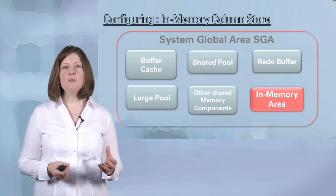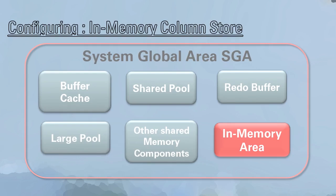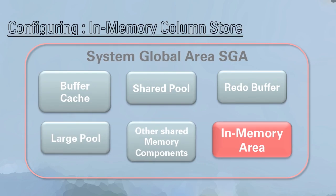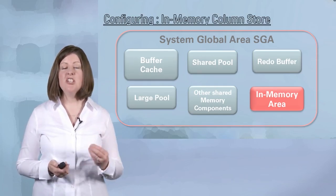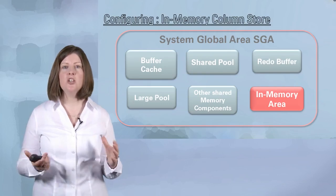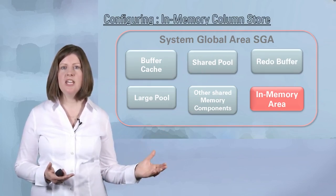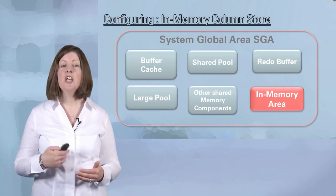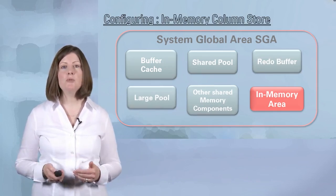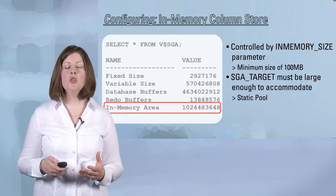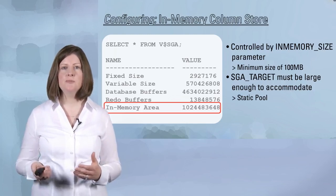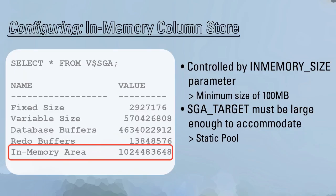The in-memory column store is a static pool, which means it will not grow or shrink during the lifetime of the database. When you're allocating the total SGA using the SGA target parameter, you need to ensure that it's large enough to encompass the existing components within the SGA — things like the buffer cache, the shared pool — as well as the new in-memory area. You can specify the size of your in-memory area by using the new in-memory size parameter. If you look in V$SGA, you'll see that new pool and how much memory from your total SGA has been allocated to that pool.